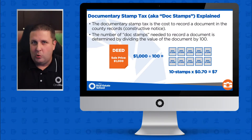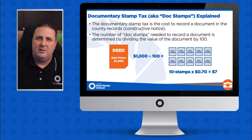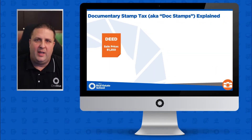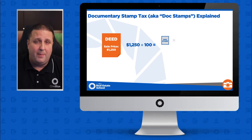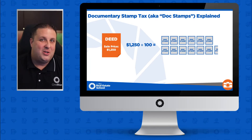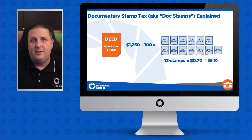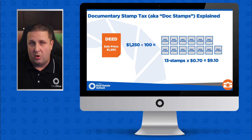Now, we can only buy whole stamps — we can never buy partial stamps. So what happens if the calculation results in a partial stamp? Take that same deed now valued at $1,250. Divide by 100 gives us 12.5 stamps. We cannot buy half a stamp, and we can't cheat the government, so we round up and buy 13 stamps. Multiply by $0.70, giving us a total tax of $9.10 for this deed to be recorded in the public records.